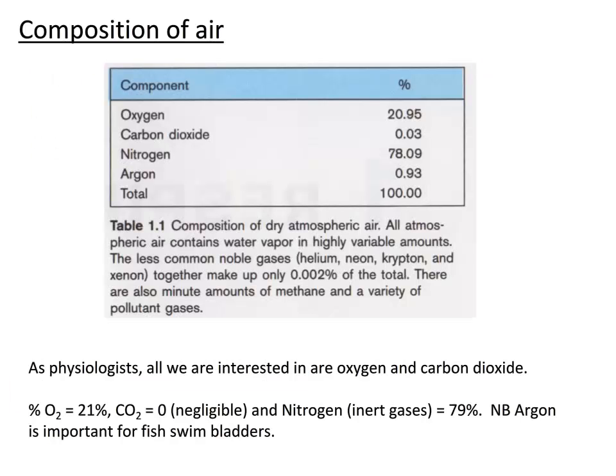If you look at the composition of air, we can say it's 21% oxygen and 79% nitrogen — there's a fractional amount of CO₂ (about 400 parts per million), nitrogen is 78%, and argon is almost 1%. But because argon and nitrogen are both inert under normal conditions, we simplify to 21% oxygen and 79% nitrogen.